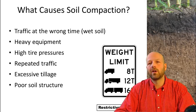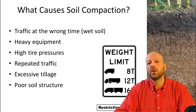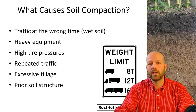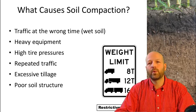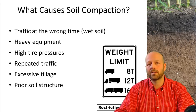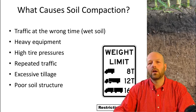Once a soil has lost its aggregation, it becomes much more susceptible to compaction. Think about a recently tilled field — if you walk in it right after tillage, you actually sink in. That field has lost its ability to hold the load. This leads to the issue of poor soil structure. Any management you can do to improve soil aggregation and structure — such as use of manures, cover crops, and similar practices — will help with compaction management.